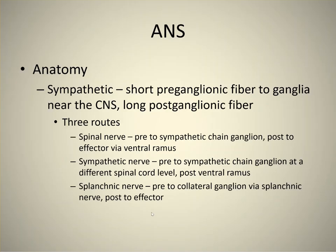In slide 10, there are actually four routes for the sympathetic division. The first is the spinal nerve pathway: the preganglionic axon goes to a sympathetic chain ganglion close to the effector via the ventral ramus or ramus communicans. The second is the sympathetic nerve pathway, where the preganglionic axon goes to a different level of the sympathetic chain ganglion, then postganglionic out to the effector organ. The third is the splanchnic nerve pathway: preganglionic to one of the collateral ganglia, then to the organ being innervated.